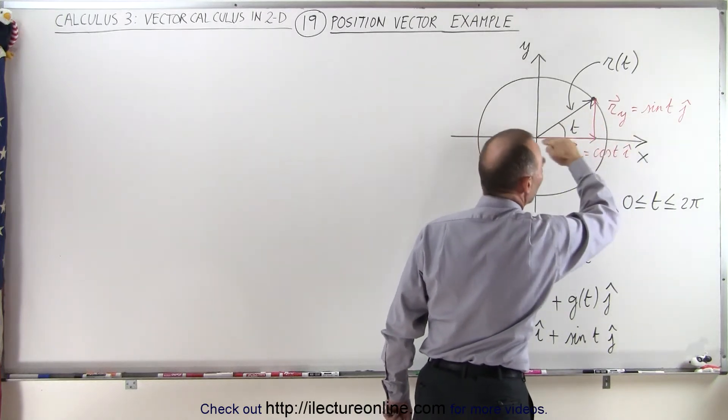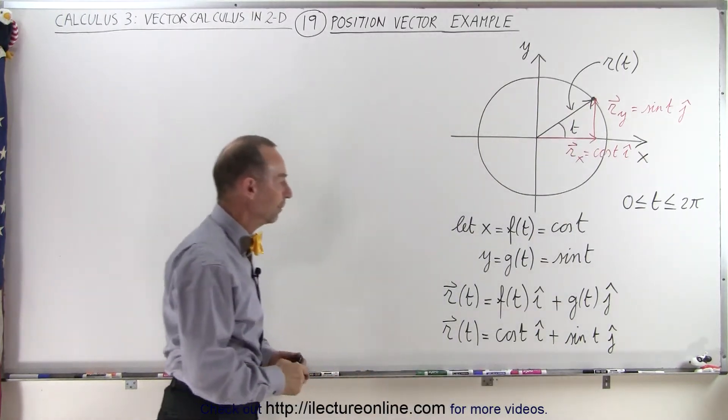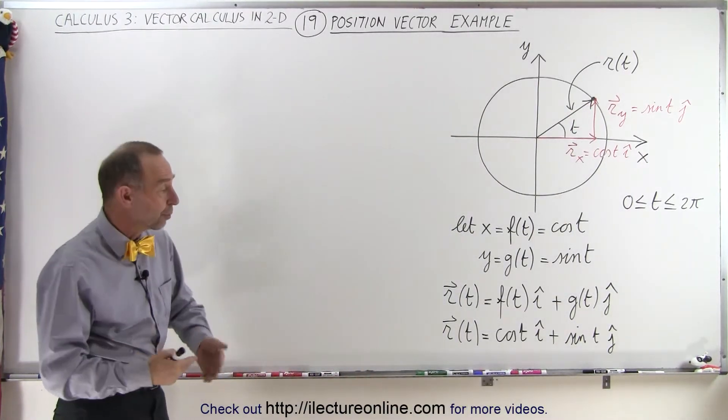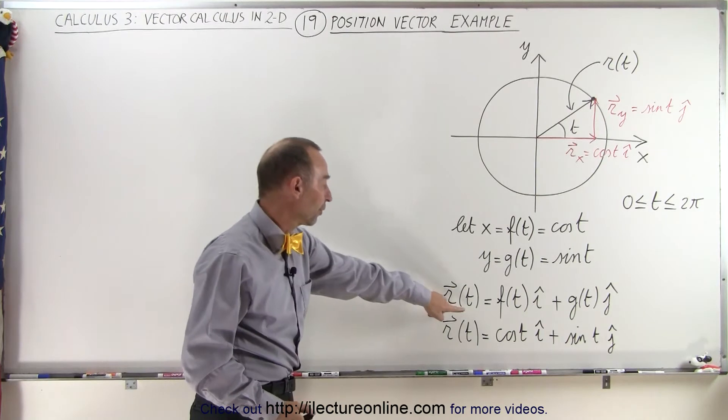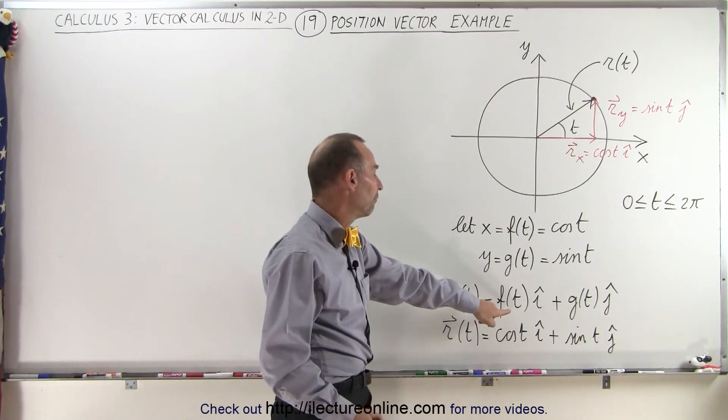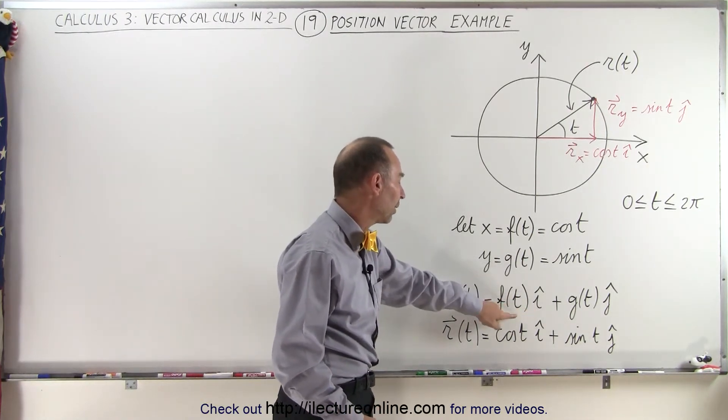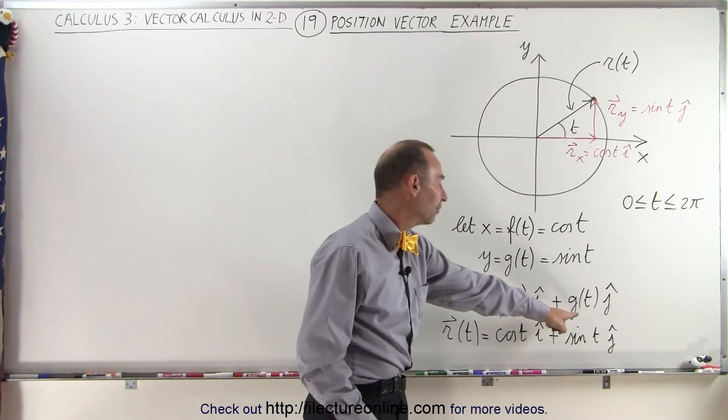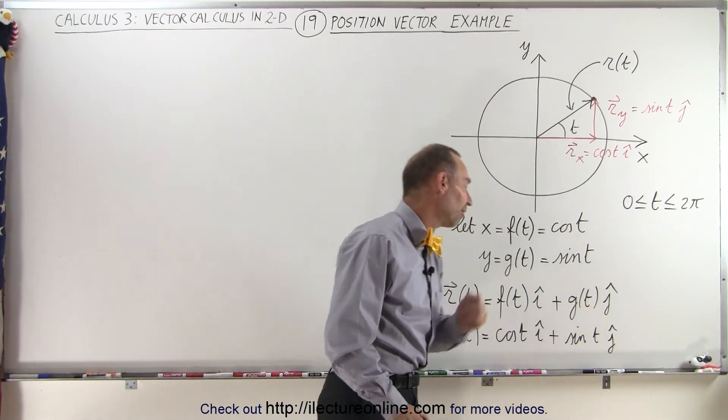So then if you want to write out your position vector, r as a function of t is equal to the function of t in the i direction, that represents the x component, and the function of t in the j direction, that represents the y component.